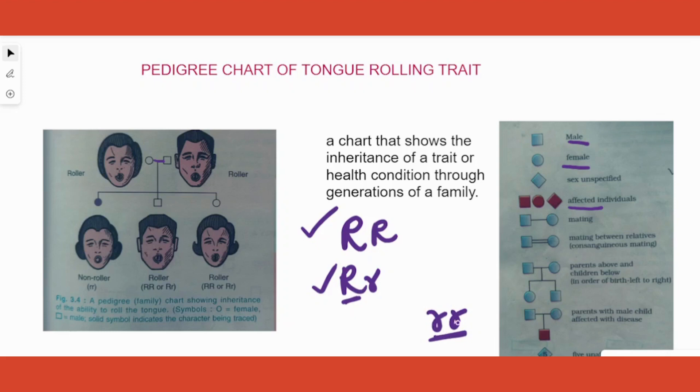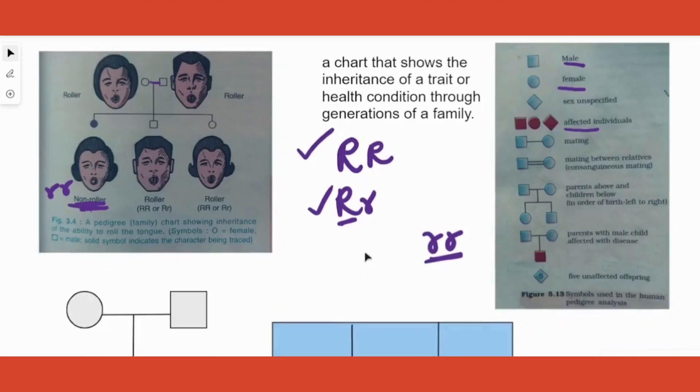However, if this is the combination of alleles, that is small r and small r, which indicates recessive alleles together, homozygous recessive condition, then he or she cannot roll the tongue. So those people are called as non-rollers and indicated by small r and small r.